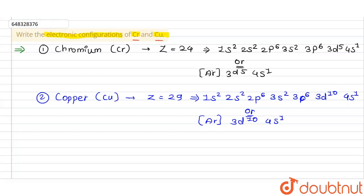Now, why has the question specifically mentioned only chromium and copper? That is the main point. Before chromium there is vanadium, represented as V. For vanadium, the electronic configuration is [Ar] 3d³ 4s². But for chromium it changes to 3d⁵ 4s¹.